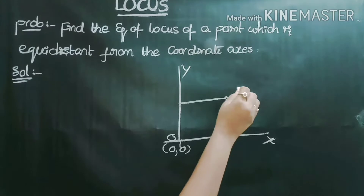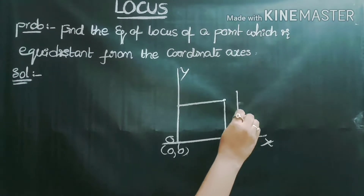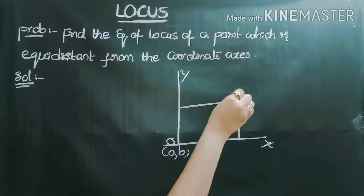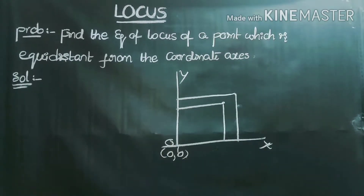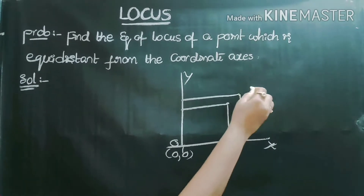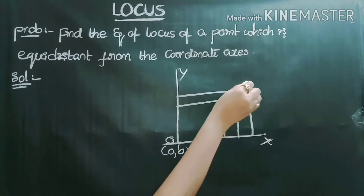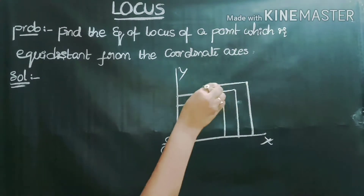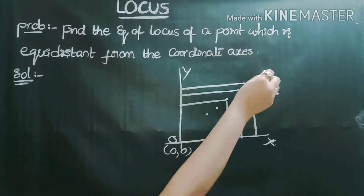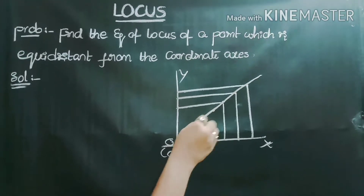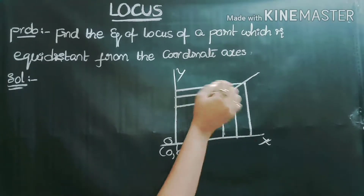Similarly, I take another point here such that the distance from that point to the x-axis equals the distance from that point to the y-axis. Again, taking one more point such that the distance from that point to the x-axis equals the distance from that point to the y-axis. We are taking all such points where the distances to the x-axis and y-axis are equal.